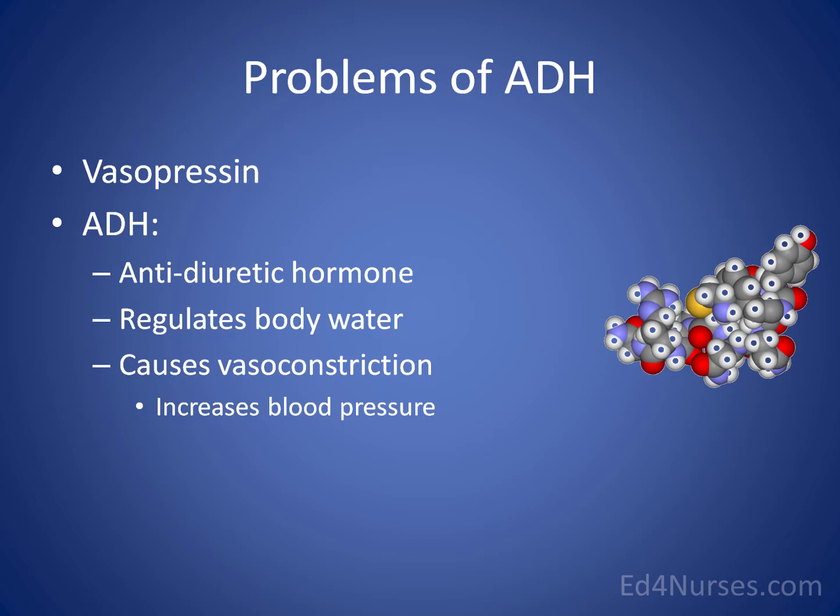The problems with SIADH and diabetes insipidus are problems of ADH, which is antidiuretic hormone — also called vasopressin. ADH regulates body water by controlling the kidneys: how much water the kidneys excrete and how much they retain. This is one of the main functions of ADH.